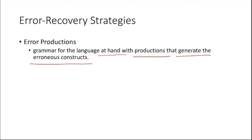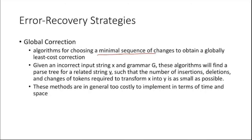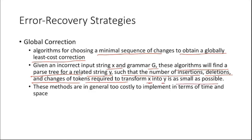Global correction involves an algorithm that chooses a minimal sequence of changes to obtain a globally least-cost correction. Given an incorrect input string X and grammar G, the algorithm finds a related string Y such that the number of insertions, deletions, and token changes required to transform X into Y is as small as possible. However, these methods are generally too costly to implement in terms of time and space, which is why error recovery techniques are often not implemented in compilers.